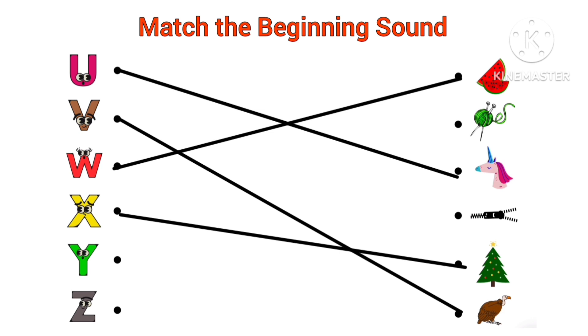Y, Y for yarn. Beginning sound of yarn is Y. Z, Z for zip. Beginning sound of zip is Z.